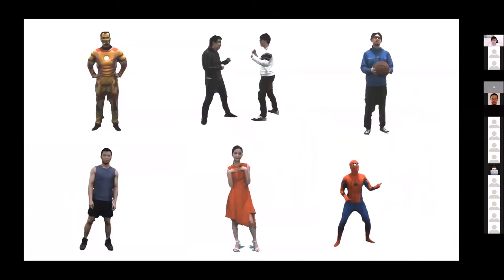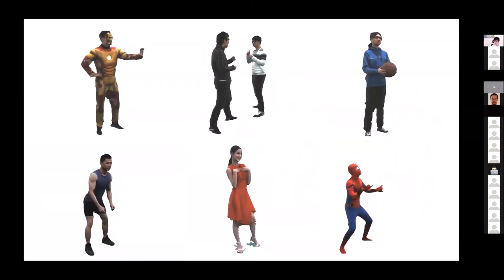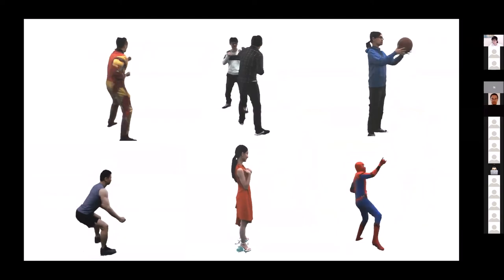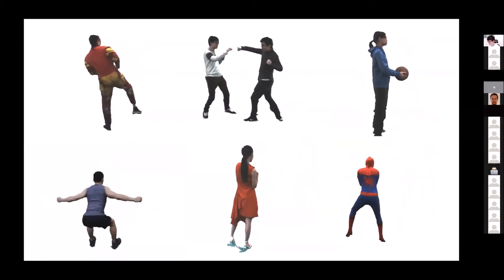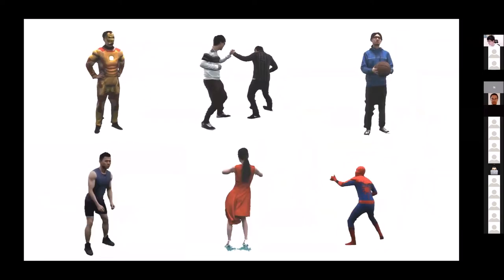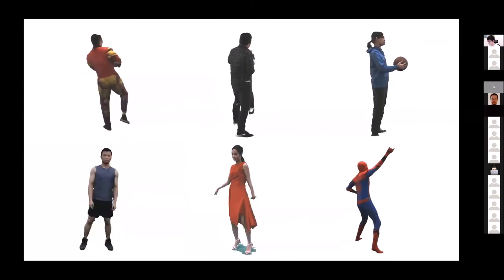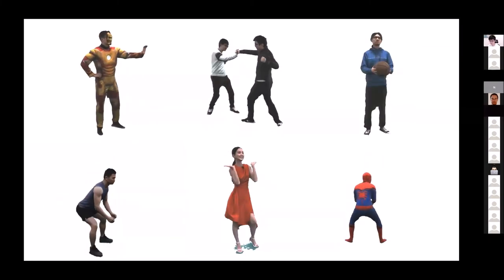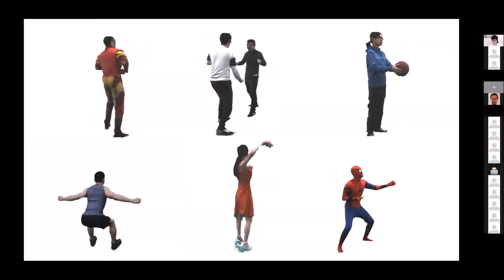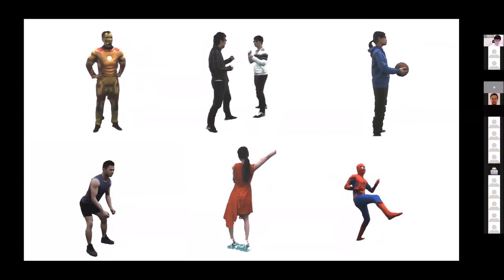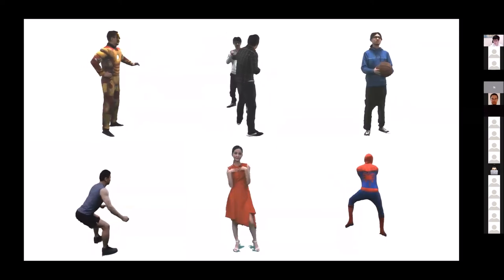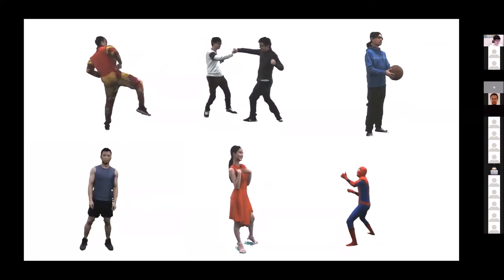With only six cameras, we can handle very complex clothing, black textures, and other tricky cases. This gives hope that we can fix geometry using neural rendering. We further extended this to using only RGB cameras — six RGB cameras — with the depth channel used only for verification of quality.